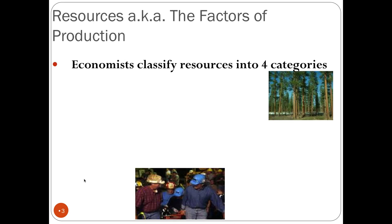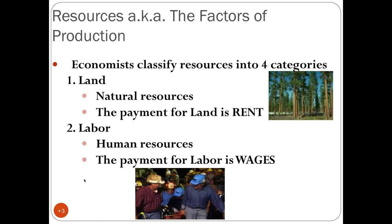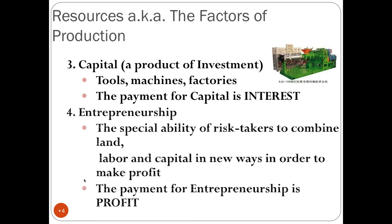Now I want to move on to the factors of production. Economists classify resources into four categories. The first is land, also known as natural resources, and the payment for land is rent. You also have labor, also known as human resources, and the payment for labor is wages. You also have capital — things like tools, machines, and factories — and the payment for capital is interest. Finally you have entrepreneurship, the special ability of risk takers to combine land, labor, and capital in new ways to make a profit, and the payment for entrepreneurship is profit. Entrepreneurs like Steve Jobs and Bill Gates took land, labor, and capital and created something new.